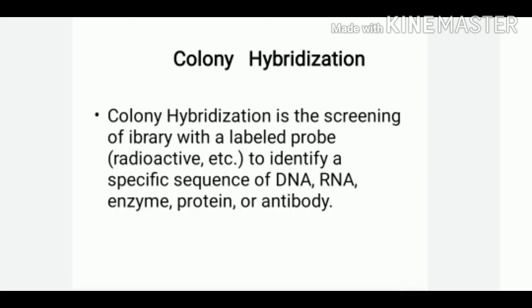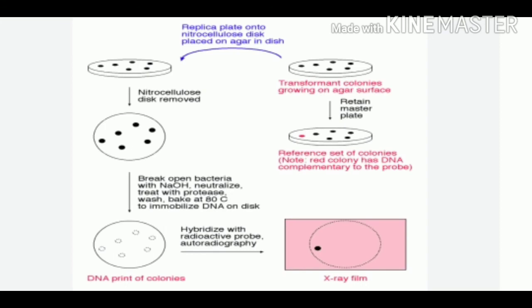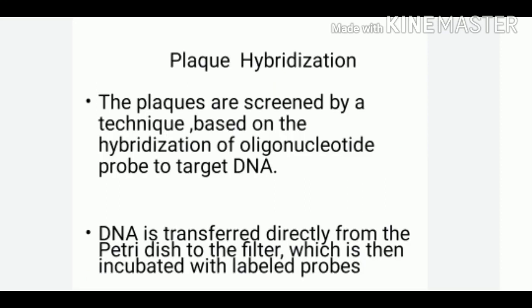Colony hybridization is defined as a method of selecting bacterial colonies with desired genes. In this process, the steps are: growth of cell colonies, transfer onto filter, followed by hybridization and the identification of the desired gene.